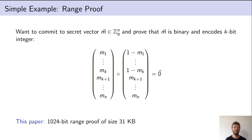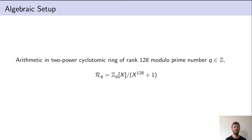Apart from this result, we also give new technical contributions interesting outside of product or range proofs. As is usually the case in efficient lattice-based constructions, we work over a polynomial ring. It has emerged in recent years that it's best to choose the smallest ring sufficient for a task. In all our protocols, we use the standard power-of-2 cyclotomic ring of rank 128, chosen for 128 bits of security, with a prime modulus Q.